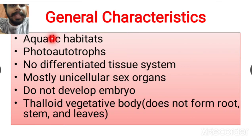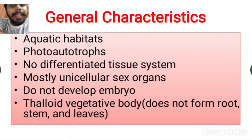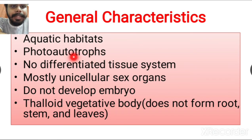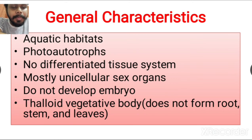The first characteristic is aquatic habitat — algae are mostly present in aquatic habitats, meaning in marine water or fresh water. The next characteristic is that they are mostly photo-autotrophs, meaning they can produce their own food by photosynthesis.